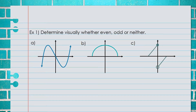Example 1: Determine visually whether each graph is even, odd, or neither. For graph A, we look and ask: is this symmetric with respect to the y-axis? No. Is it symmetric with respect to the origin? Yes. Since it is symmetric to the origin — which starts with the letter O — this must be an odd function.